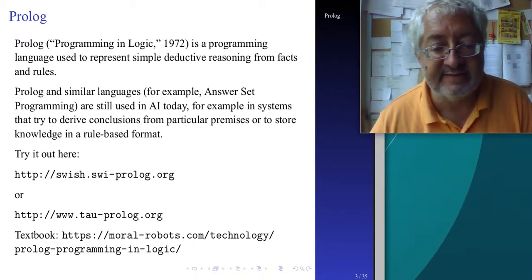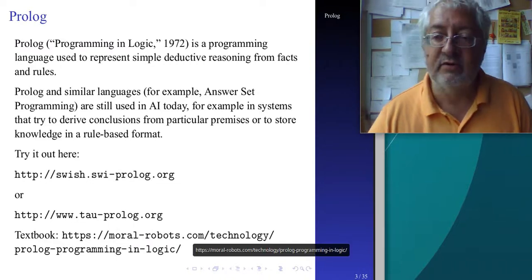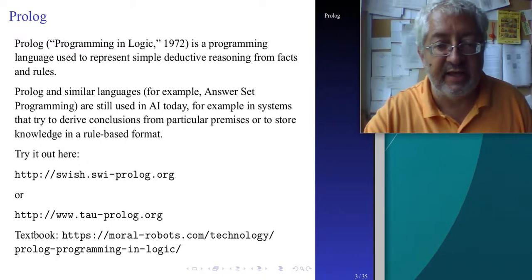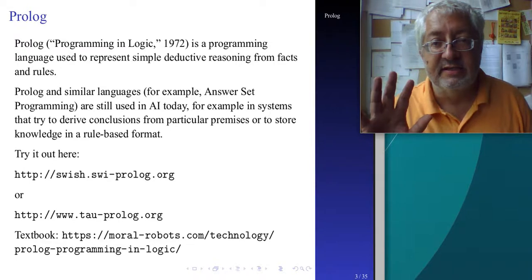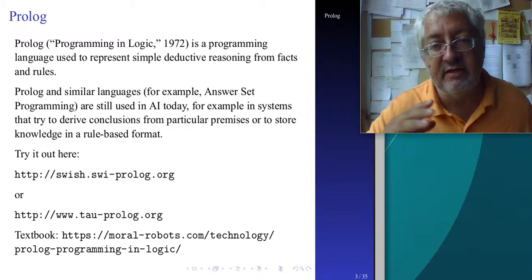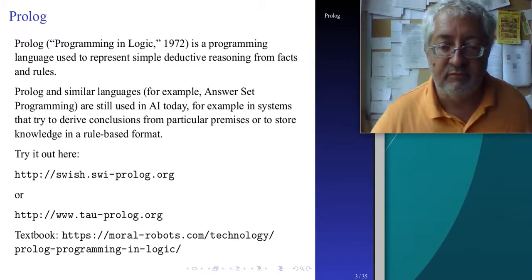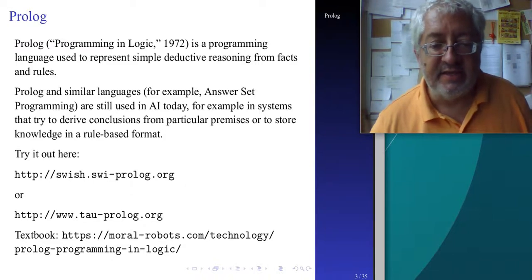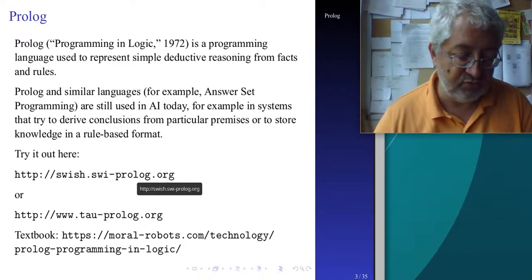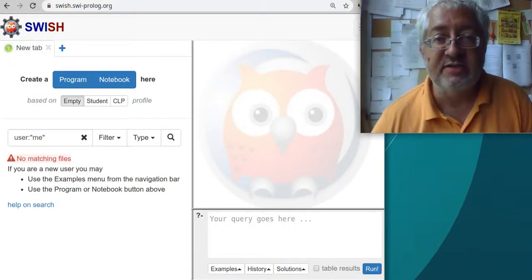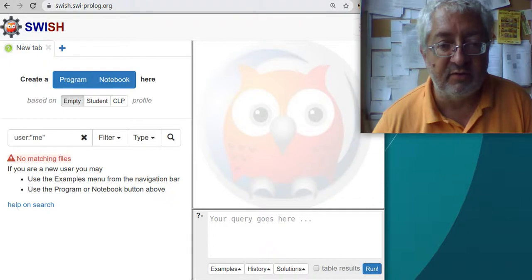There are multiple Prologs on the web that you can use for free. One is SWISH, which is very nice. There's also Tau Prolog. I've also written a blog post that gives you the same information as this presentation in a more conversational form, including many of the examples we'll cover. SWISH is available online and we'll use it right now.